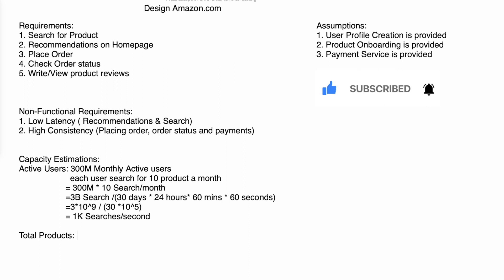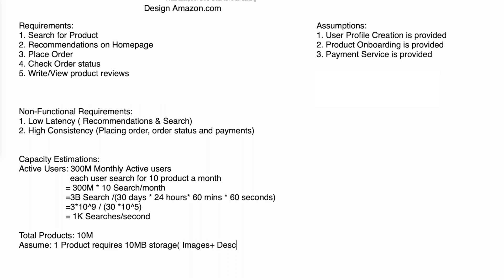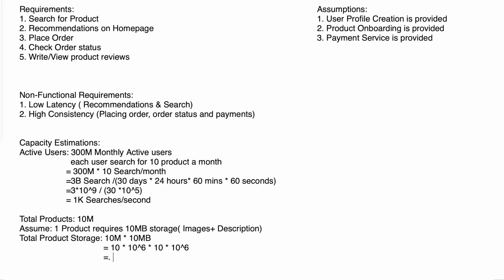For storage estimation: with 10 million products in the catalog, each requiring 10 MB for images and descriptions, the total storage is 10 million × 10 MB = 10×10^6 × 10×10^6 = 100×10^12, which equals 100 terabytes of storage required to store all product information.